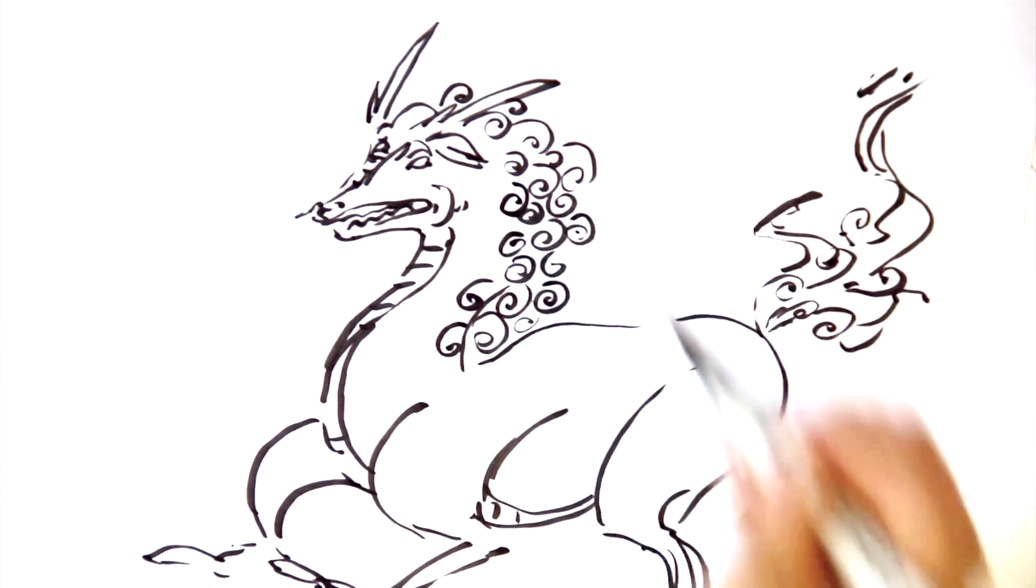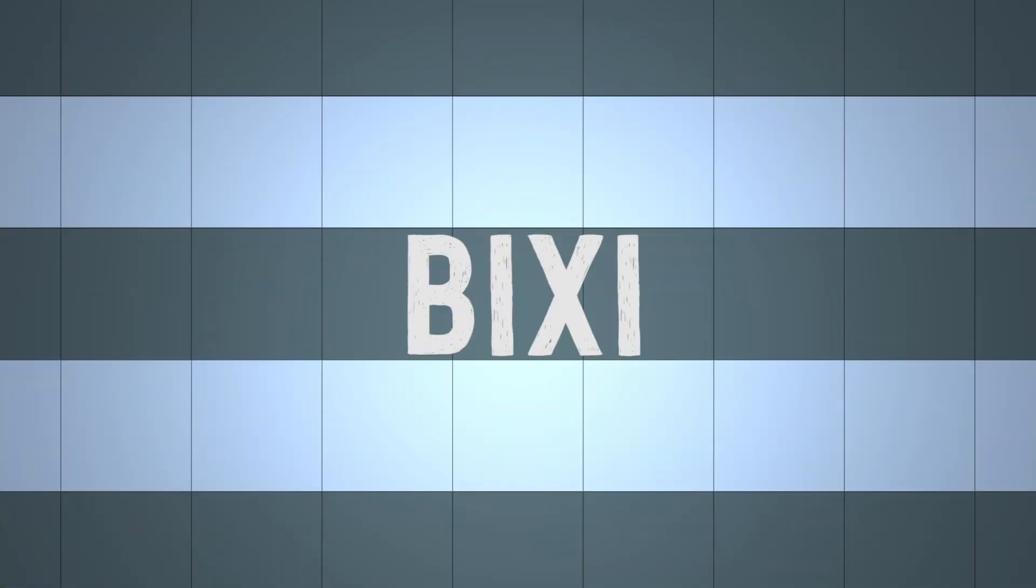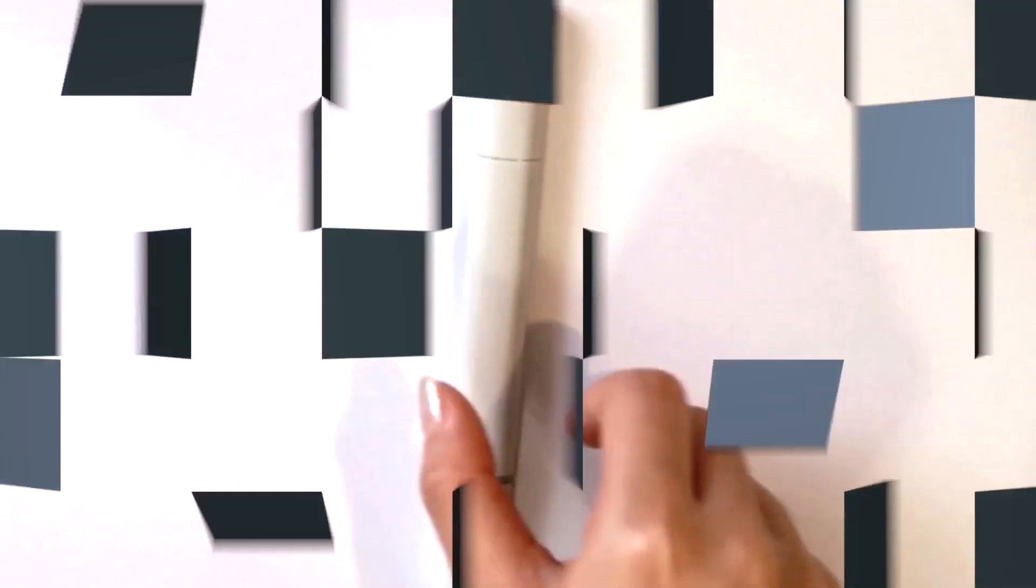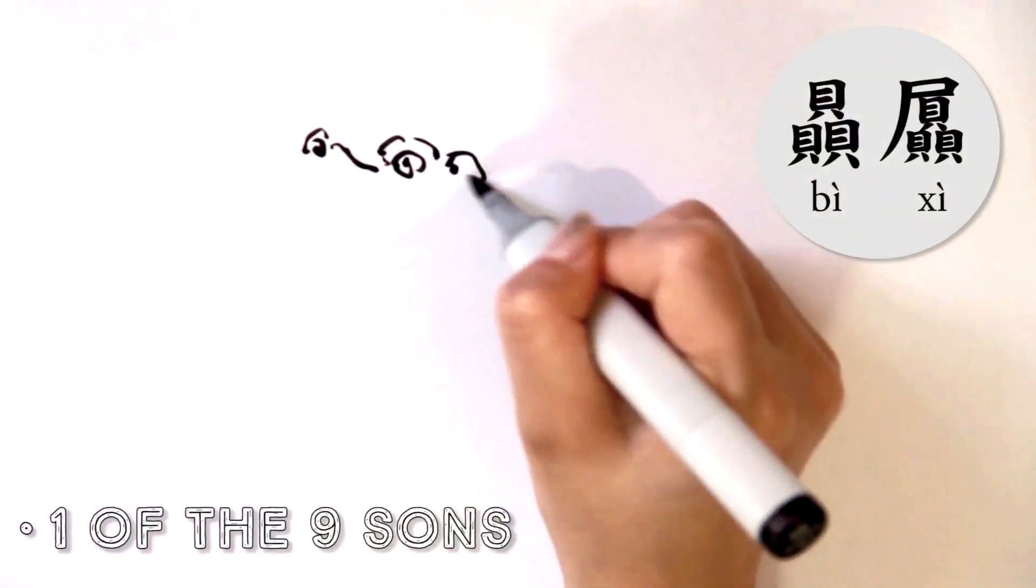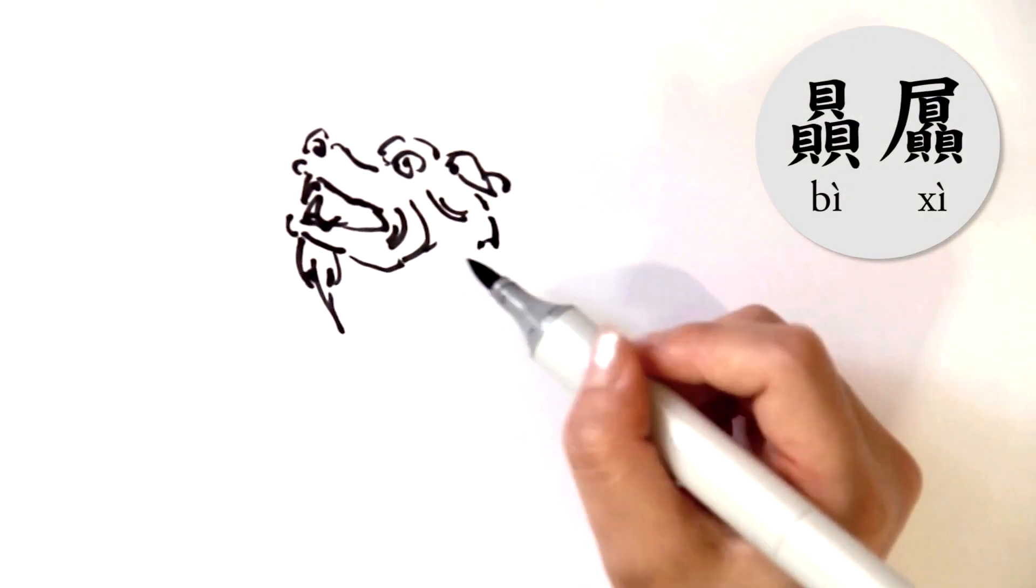The Chilin is more than capable of pursuing evildoers, as it possesses supernatural powers. Bi Xi. Last but not least, we have the Bi Xi, which is one of the nine sons of the dragon. Bi Xi has a really interesting story.